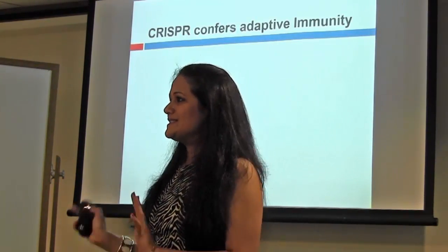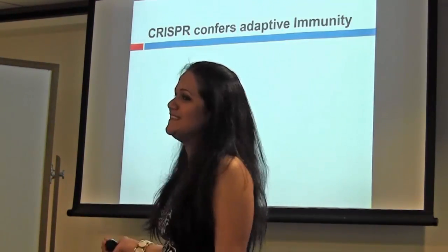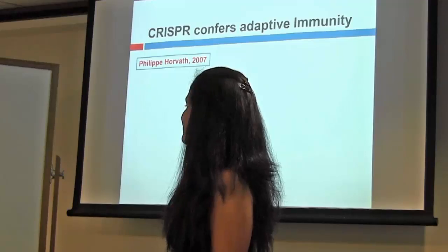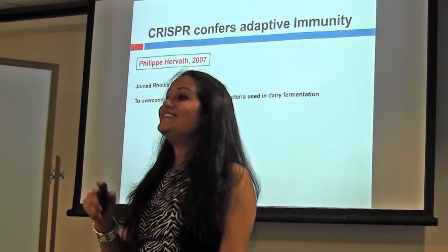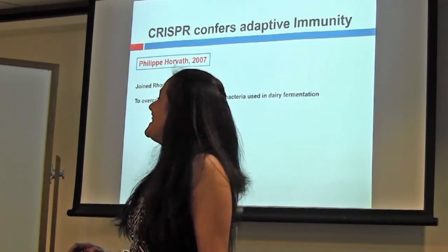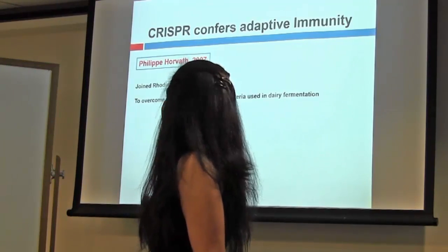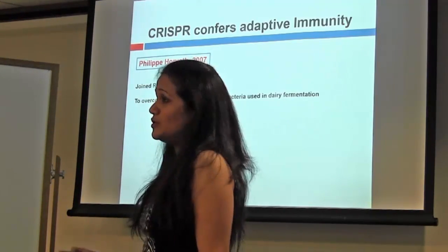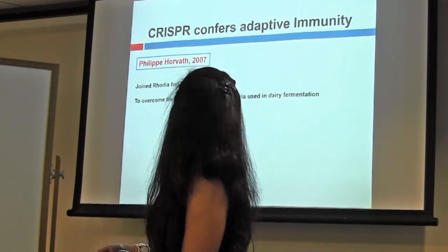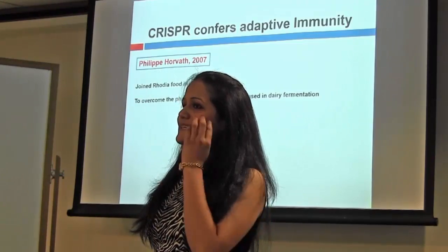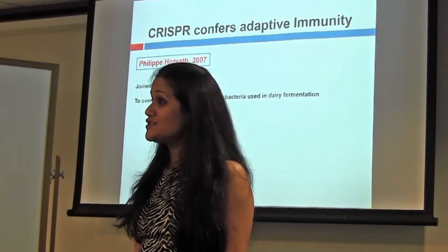So far, they knew it had something to do with immunity, but no one knew clearly what exactly was happening. In 2007, Barrangou, who was never interested in a postdoctoral fellowship and clearly wanted to do industrial jobs, joined Rhodia food industry as a microbiologist. His main goal was to overcome phage infections in bacteria used in dairy fermentation. He heard about these CRISPR loci at a conference and focused on S. thermophilus acquiring phage-derived sequences of the CRISPR loci.